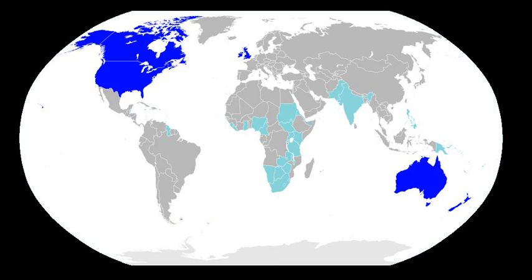English has ceased to be an English language in the sense of belonging only to people who are ethnically English. Use of English is growing country by country internally and for international communication. Most people learn English for practical rather than ideological reasons. As decolonization proceeded throughout the British Empire in the 1950s and 1960s, former colonies often did not reject English but rather continued to use it as independent countries setting their own language policies. For example, the view of the English language among many Indians has gone from associating it with colonialism to associating it with economic progress, and English continues to be an official language of India. The number of English language books published annually in India is the third largest in the world after the US and UK.